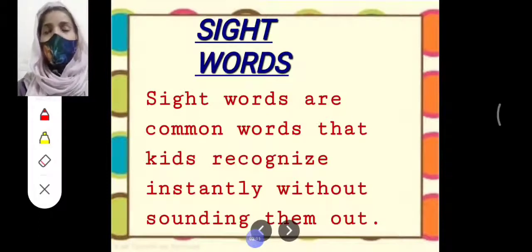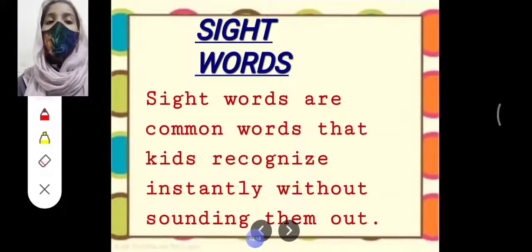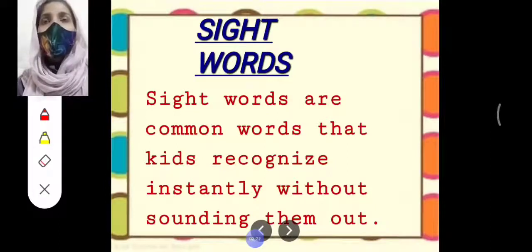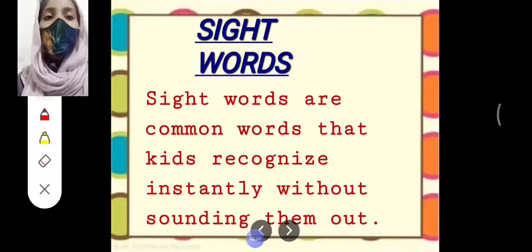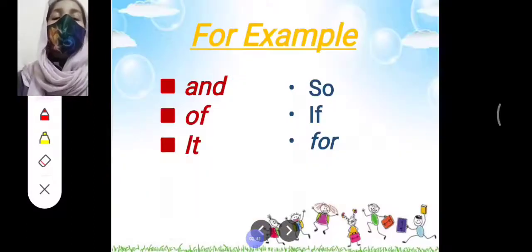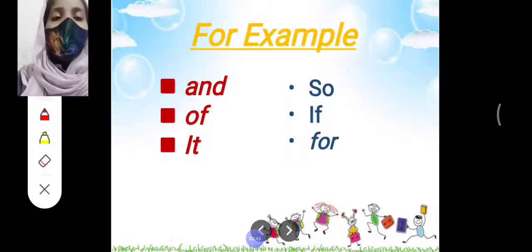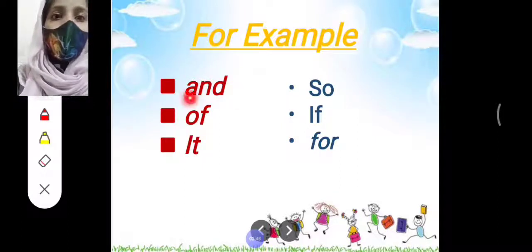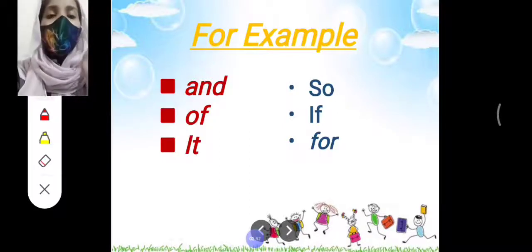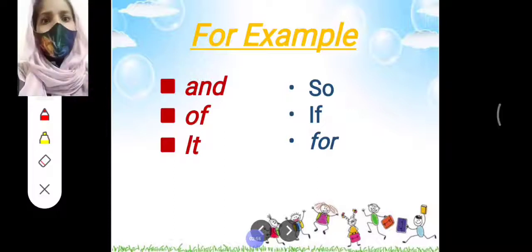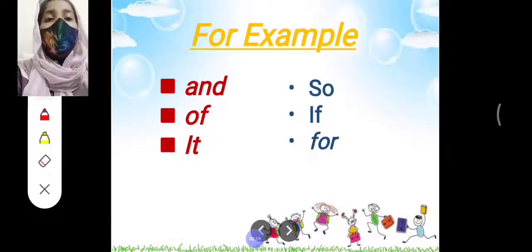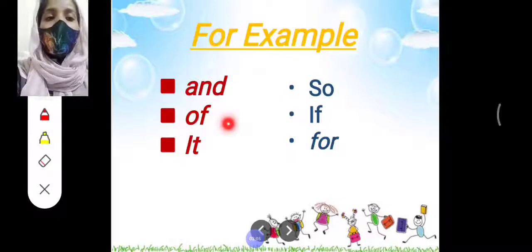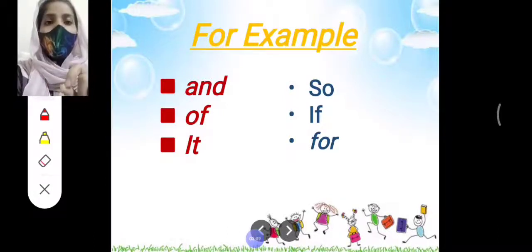We have also discussed in class what sight words are, and now we will read once more. Sight words are words that, the moment we see them, their pronunciation immediately comes to our mind — we instantly know how they are spoken. For example, the first example is 'and' — A-N-D. Whenever we see 'and,' our mind immediately gets the message that this is the word 'and.' We don't even need to read its spelling. Such words are called sight words. Next we have 'of.' We don't need to read its spelling either.